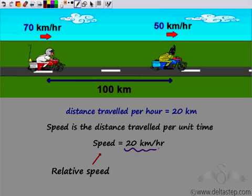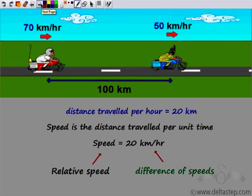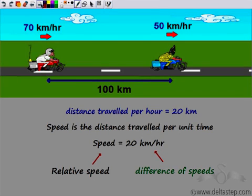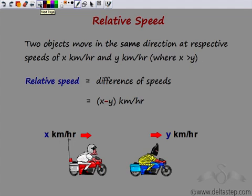How do we get this 20? If you look at both these speeds, the subtraction of the two gives 20. So this relative speed is nothing but the difference of speeds — 70 minus 50. So when two objects are moving in the same direction with different speeds, the relative speed is the difference of the speeds, which is 70 minus 50 = 20 km per hour. The object behind must have greater speed than the one in front to catch it. When two objects move in the same direction with speeds x and y, the relative speed is x minus y km per hour.